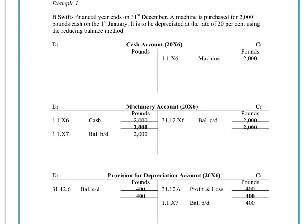Here we're going to look at using two methods of depreciation: the reducing balance method and the straight line method, in terms of their entry into the double entry accounting system. The first one we're going to look at is an asset — in this case a machine — that's being depreciated using the reducing balance method at a rate of 20% per year.